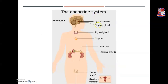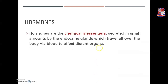The endocrine system consists of the glands: pituitary gland, pineal gland, thyroid gland, thymus gland, pancreas, adrenal gland, and gonads — which consist of testes in men and ovaries in females. Hormones are chemical messengers secreted in small amounts by the endocrine glands and travel throughout the body via blood to affect various other organs.